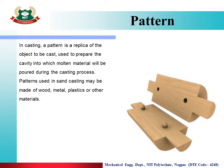The pattern looks just like the casting product but is made of a different material. It is used to prepare a cavity — specifically, to make the mold cavity inside the sand. We place the pattern, fill sand tightly around it, then remove the pattern. The impression left becomes the mold cavity, into which molten metal is poured and solidified to obtain the casting product. Patterns used in sand casting are made of wood, metal, plastic, and other materials.